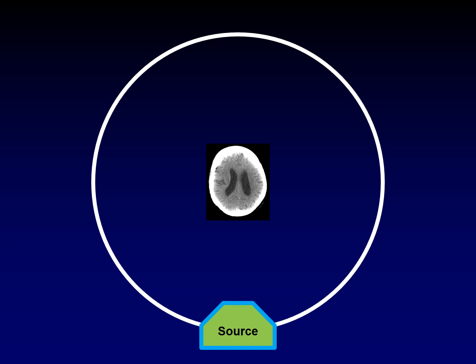When we do a CT scan, we assume that the patient is in the center of the CT — not just the physical center of the bore, but also the point of rotation that the gantry is rotating around. All of the mathematics and physics we use depend upon this assumption of the patient being centered.